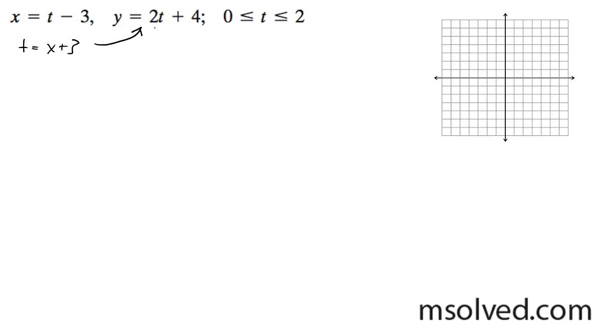We can put this into the y equals 2t plus 4 equation. So we get y is equal to 2 times x plus 3 plus 4. We get y is equal to 2x plus 6 plus 4. y is equal to 2x plus 10.